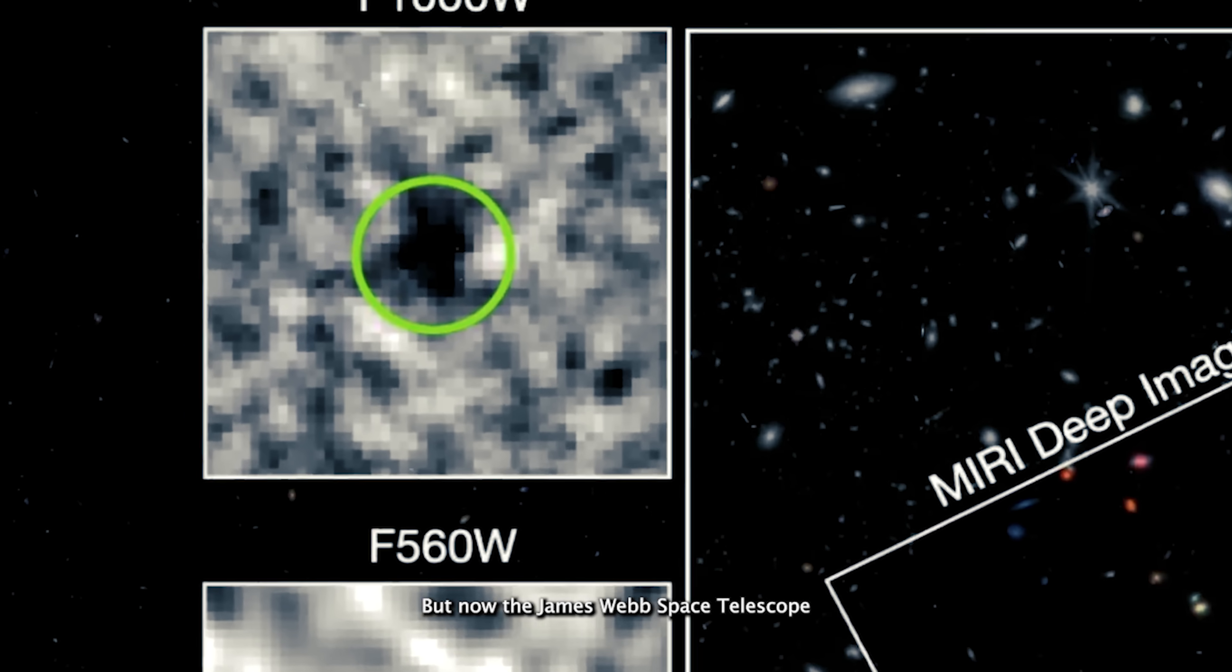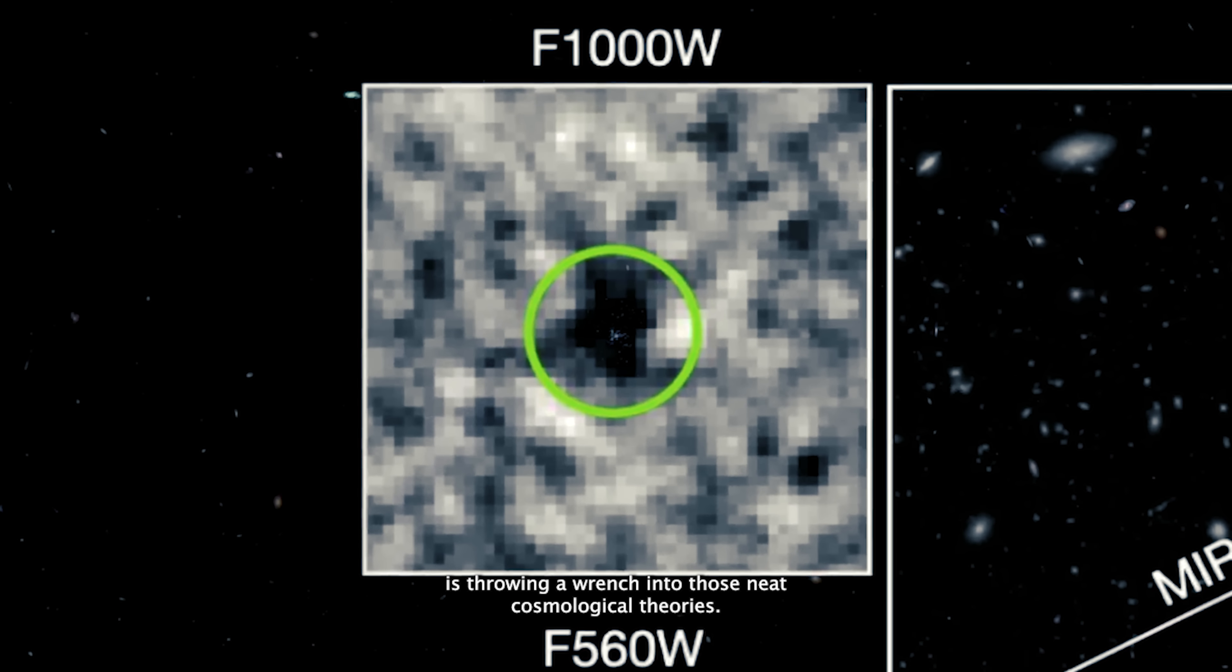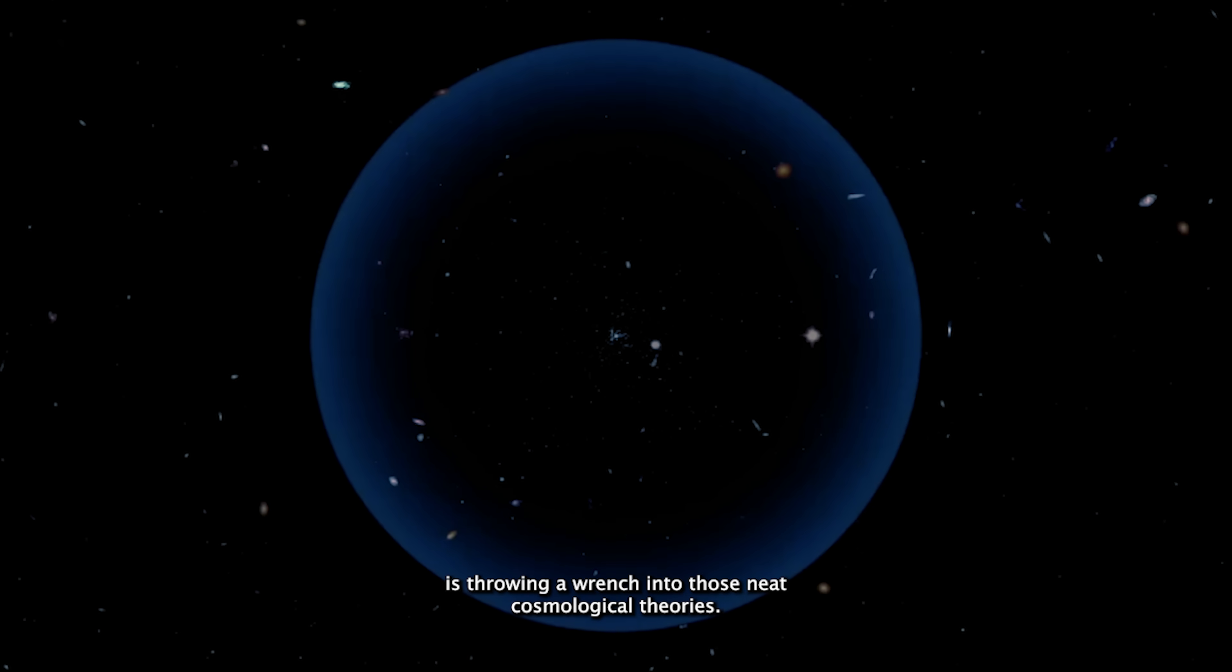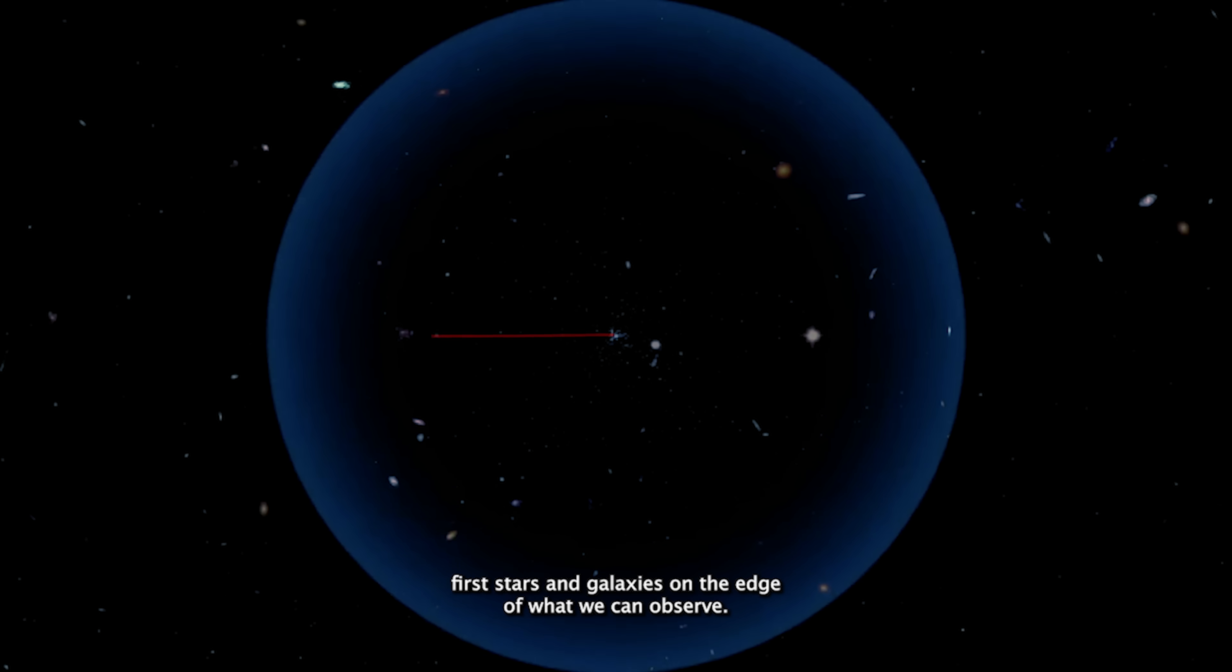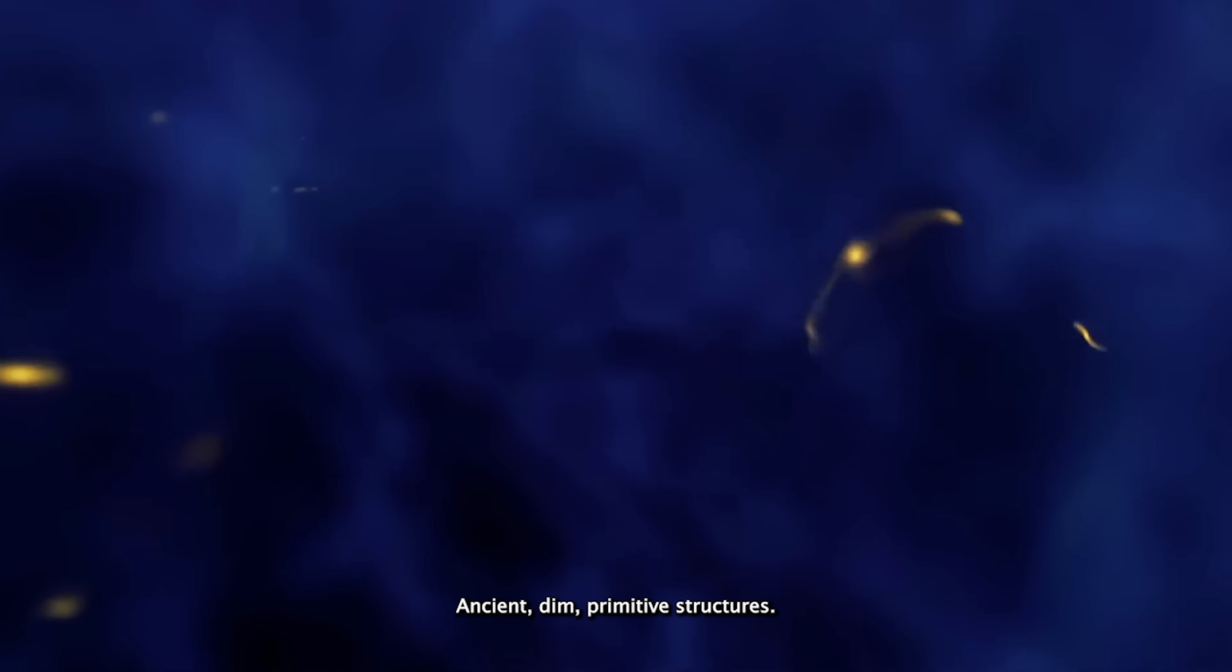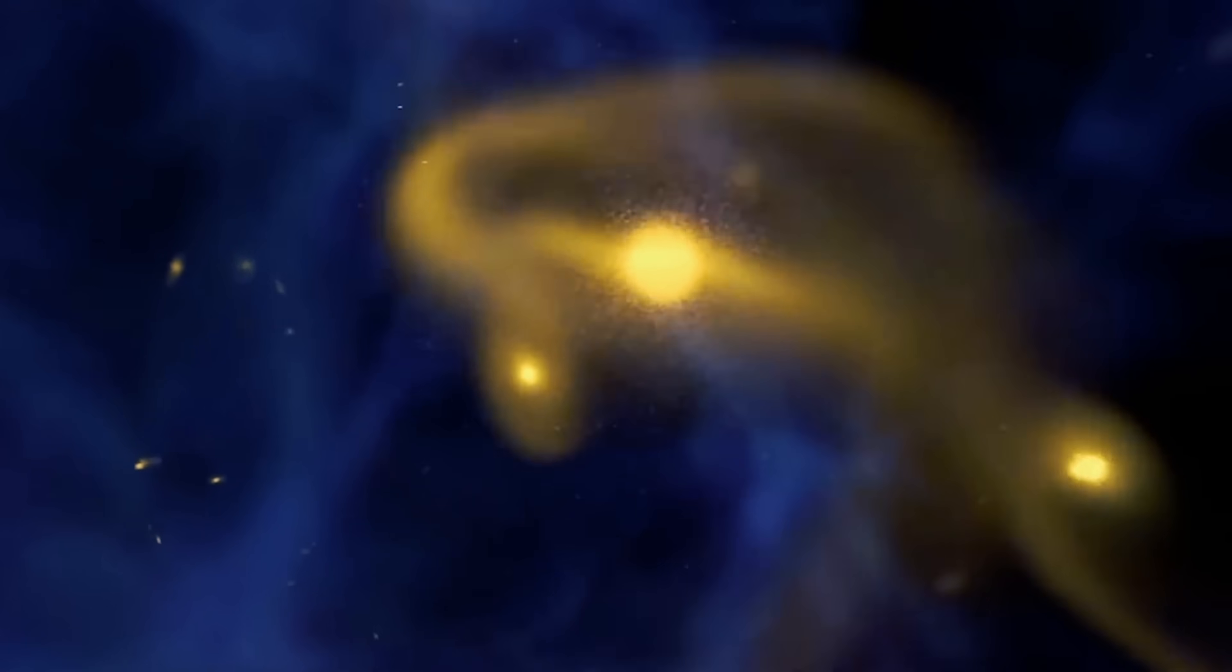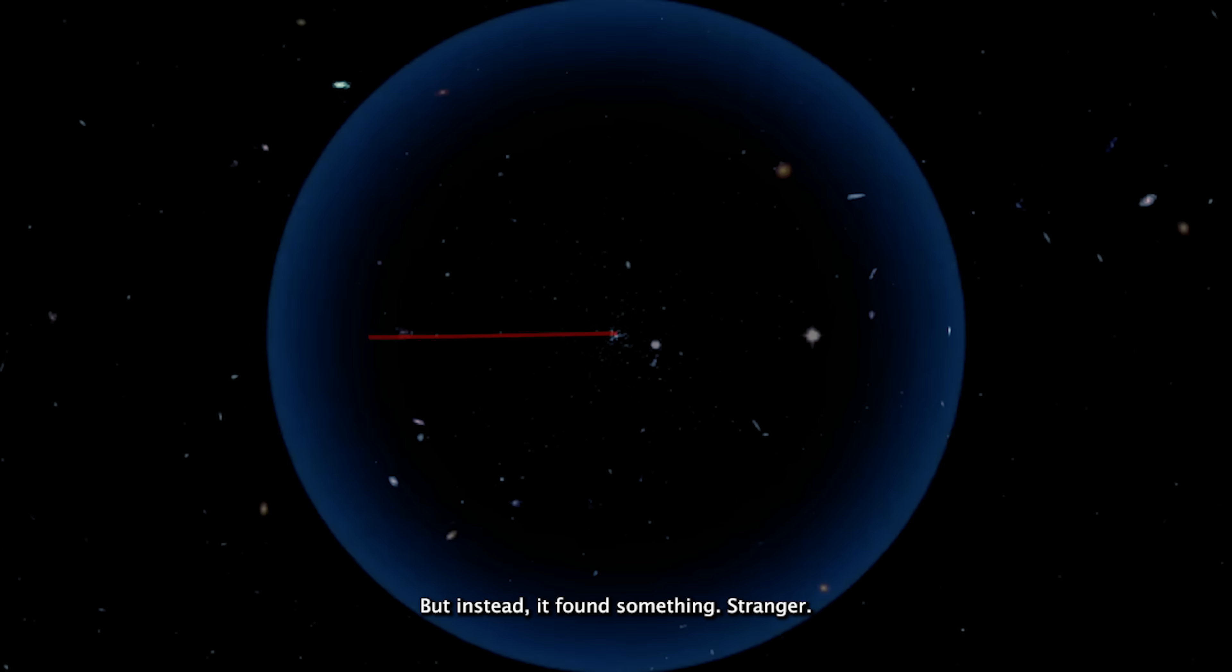But now, the James Webb Space Telescope is throwing a wrench into those neat cosmological theories. Webb was expected to spot the universe's first stars and galaxies on the edge of what we can observe. Ancient, dim, primitive structures. But instead, it found something stranger.